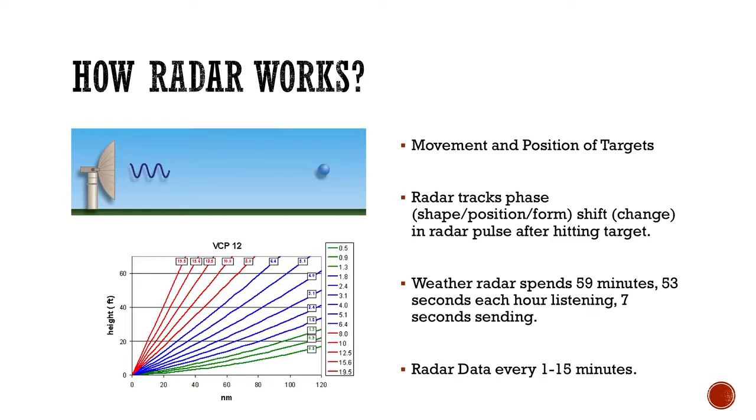So the weather radar spends, in a typical hour, almost the whole time listening for those pulses to come back. 59 minutes and 53 seconds. Only 7 of those seconds are actually spent sending those pulses out very quickly to try to bounce off of something. And we can get radar data from every 1 minute or so to every 15 minutes, depending on what slices of the atmosphere we are looking at and where exactly we're looking.